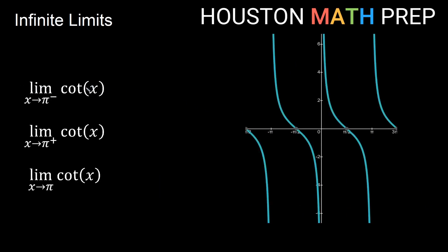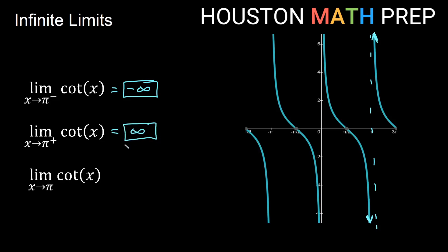Looking at a similar situation with cotangent, as x approaches π — here's the asymptote at π — approaching from the negative side, from the left, we're on the branch down here, which gives a negative infinite value, so this limit is negative infinity. If we approach x equals π from the positive side, we're on the piece up here approaching from the right toward the asymptote, and that goes positively infinite. Since these are not the same sign of infinity, the overall limit as x approaches π of cotangent x does not exist.